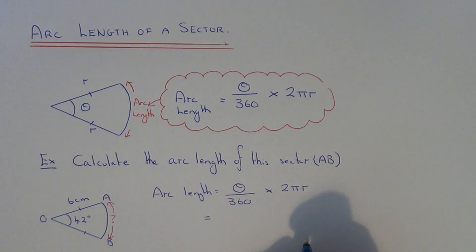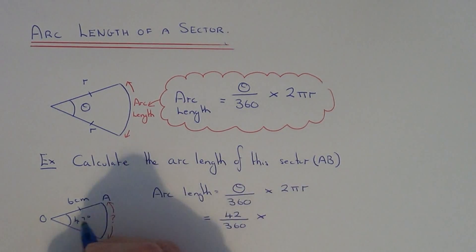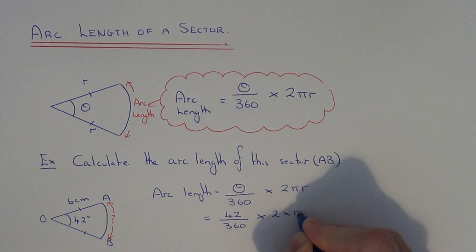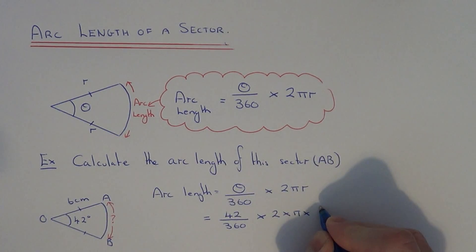So we just need to substitute our angle and our radius into the formula. Theta is 42, so we divide this by 360, and we multiply that by 2 times π times by the radius of the sector which is 6.